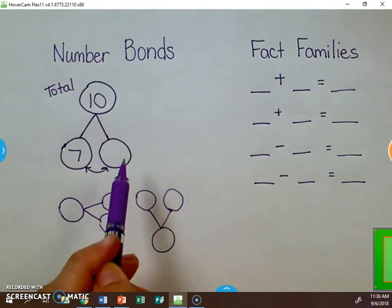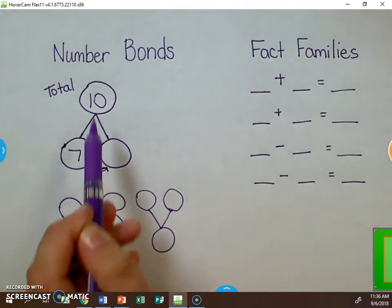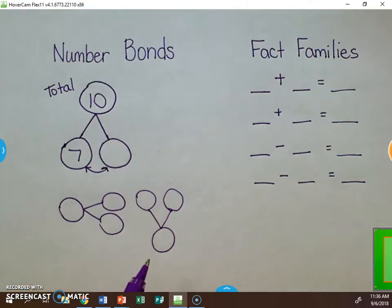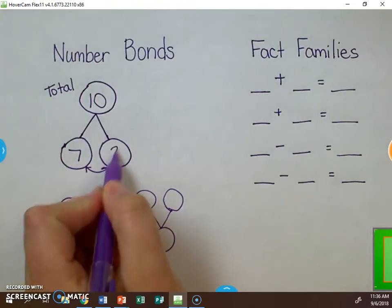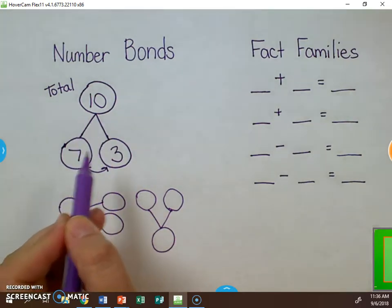10 minus 7 to get this number. Second, they could start at 7 and count up to 10. Either way is fine, so 10 minus 7 is 3.